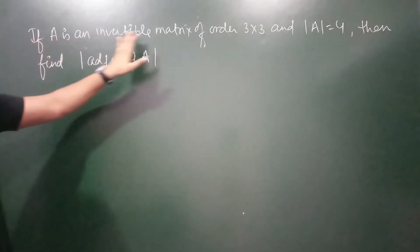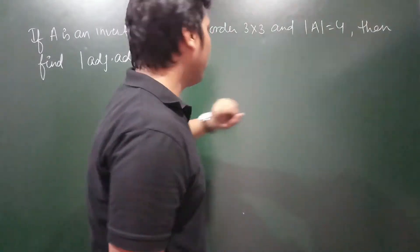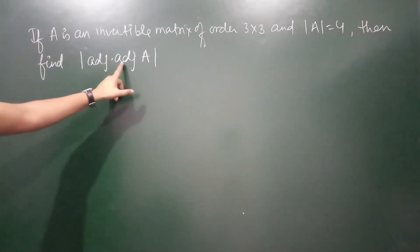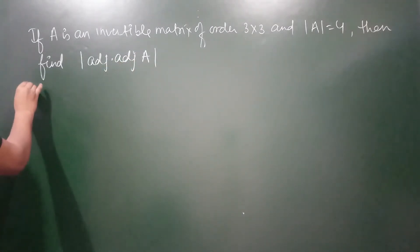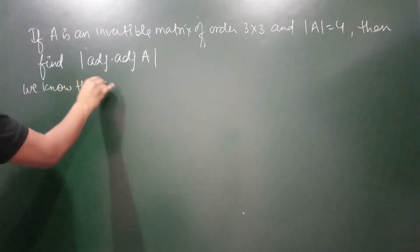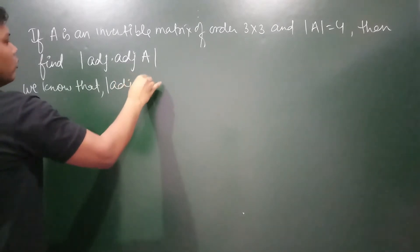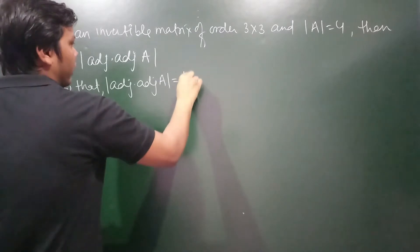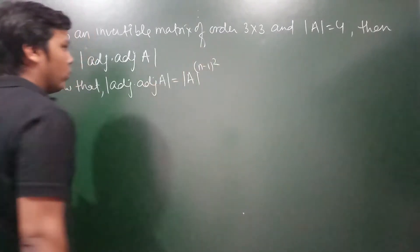So if A is an invertible matrix of order 3×3 and determinant of A equals 4, then we have to find the value of determinant of adjoint of adjoint of A. We know that determinant of adjoint of adjoint of A is given by determinant of A raised to the power (n−1)².